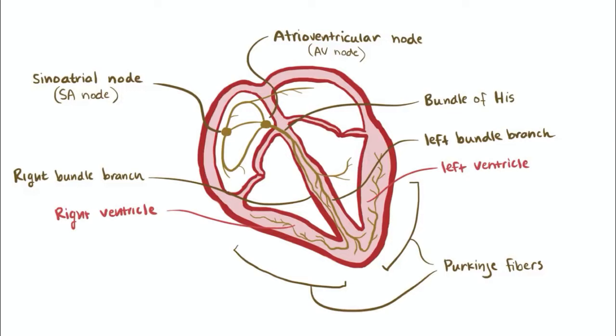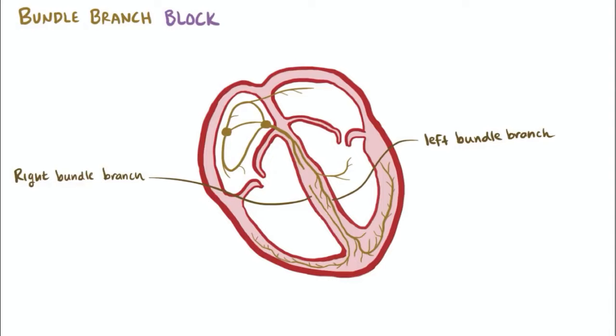Now a bundle branch block describes when the electrical signal gets completely blocked or held up along one of the bundle branches. In most cases, this block or delay is caused by fibrosis, or scarring that either occurs acutely or chronically.